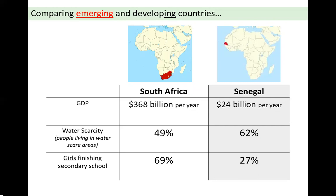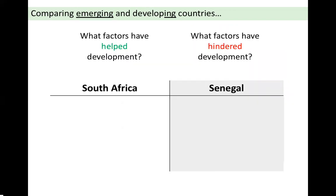In South Africa, more people are working in manufacturing — the secondary industry — or in office jobs requiring a university degree, which is the tertiary sector. Senegal is still a developing country, and its GDP — gross domestic product — is much lower than South Africa's. The two indicators presented for these countries are water scarcity and girls finishing secondary school. Water scarcity is somewhat similar in both countries, with Senegal being slightly more arid as it's near the Sahara Desert in an area of high pressure.